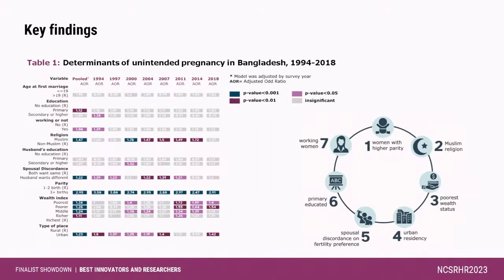This is one of our key findings, where we determine the determinants of unintended pregnancy. The colored cells define the statistical level of significance. From the pooled analysis, we found seven risk factors: women with higher parity, women with Muslim religion, poorest wealth status, urban residency, spousal discordance on fertility preference, women who are primarily educated, and women involved in income-earning activities.